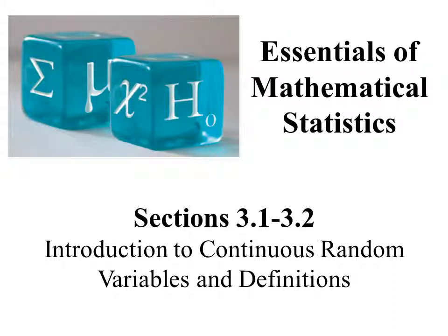Hello, this is the sections 3.1 and 3.2 lesson. In Chapter 2, we introduced the idea of discrete random variables, which have ranges that are either finite or countable. In this chapter, we're going to introduce continuous random variables. Many of the ideas are the same; the only difference is that with continuous random variables, we're going to integrate rather than add. Section 3.1 motivates the basic ideas, and Section 3.2 gives formal definitions.